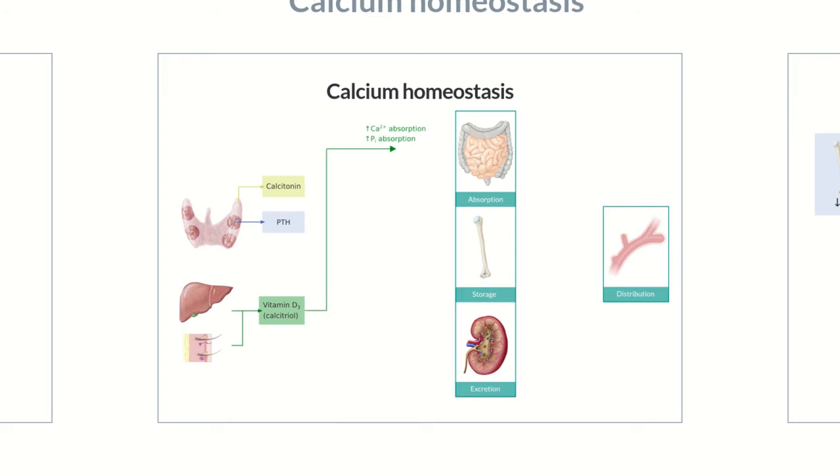Vitamin D facilitates the absorption of calcium and phosphate from food in the gastrointestinal tract, maintaining their blood levels. This activates osteoblasts and, consequently, mineralization as well as bone remodeling. In the kidney, vitamin D ensures the resorption of calcium and phosphate, however, for the latter, only in the presence of PTH.